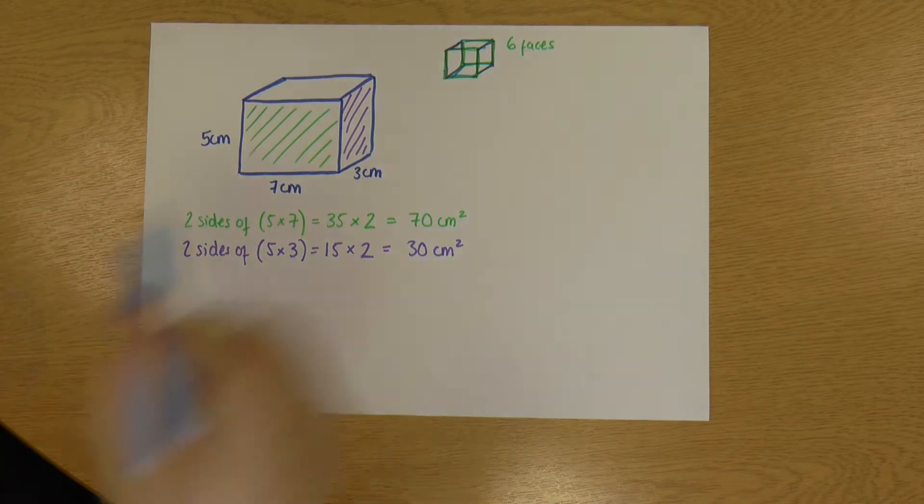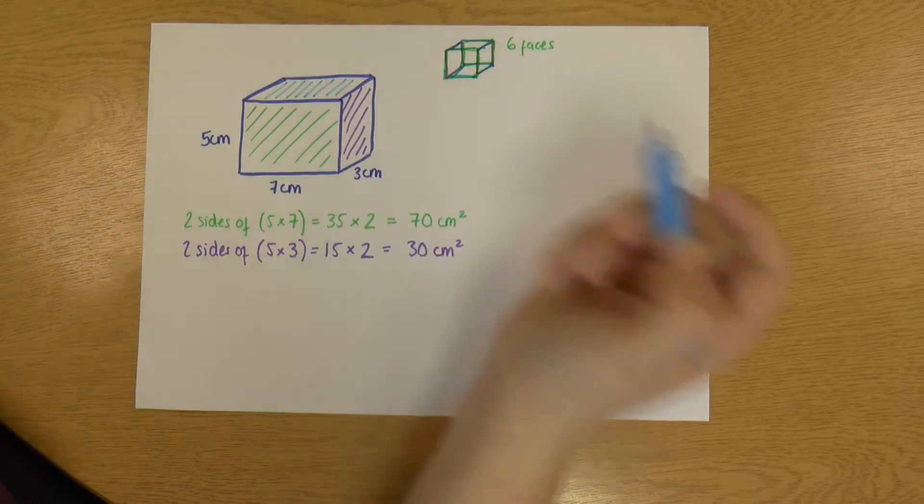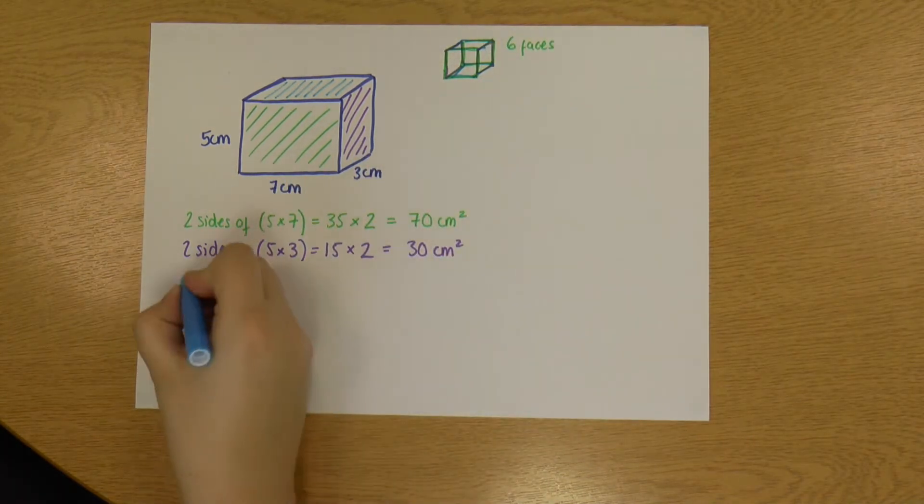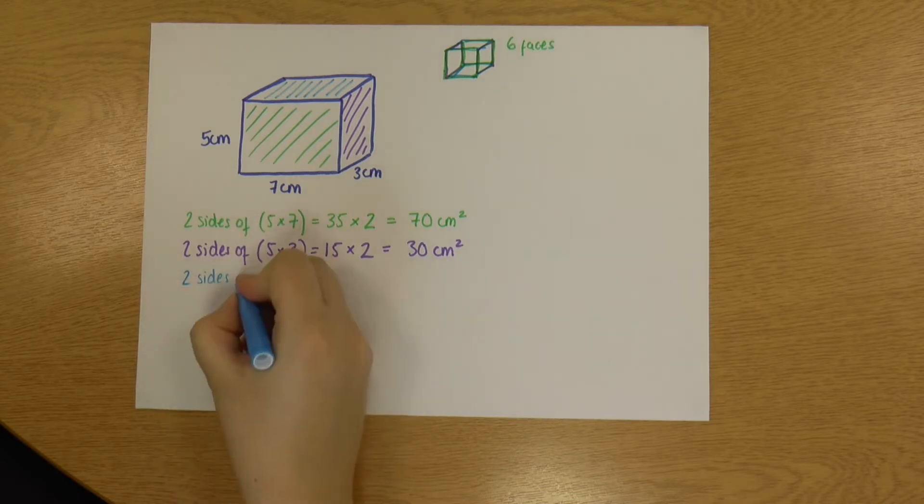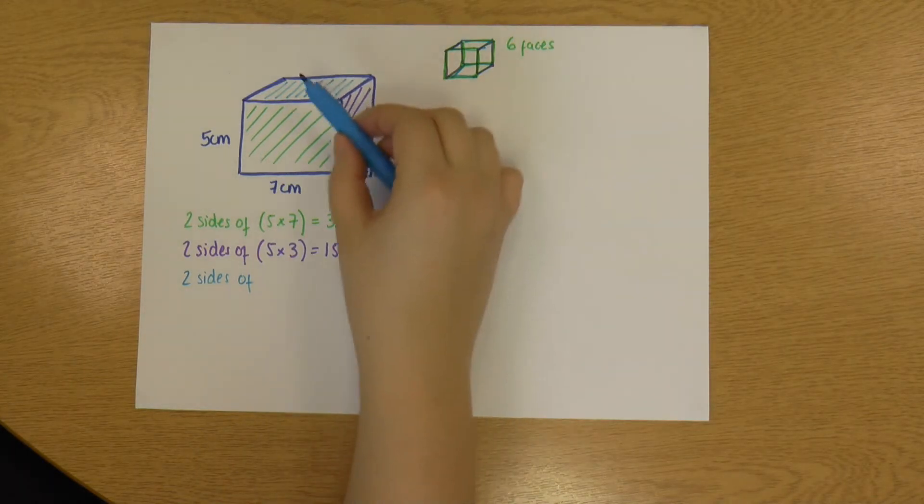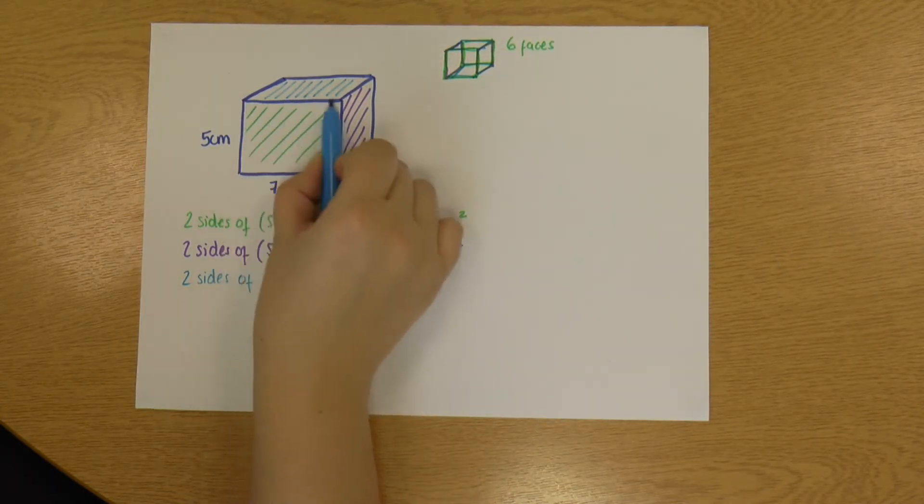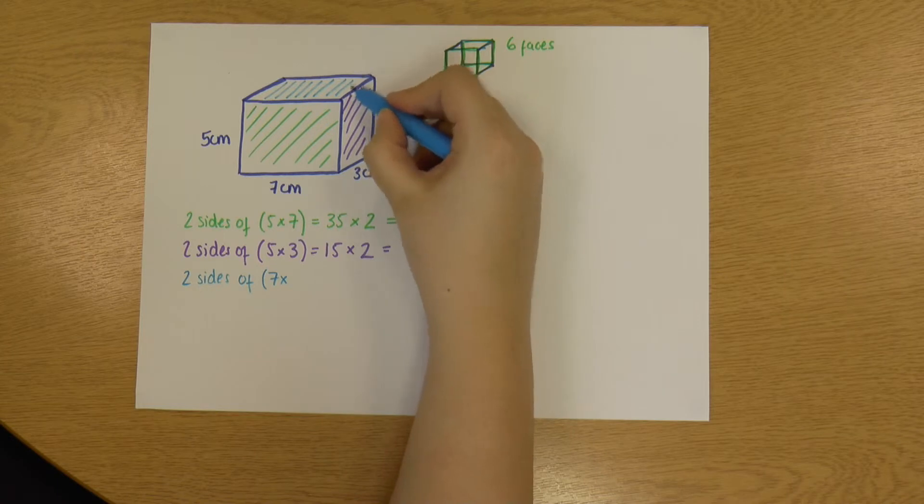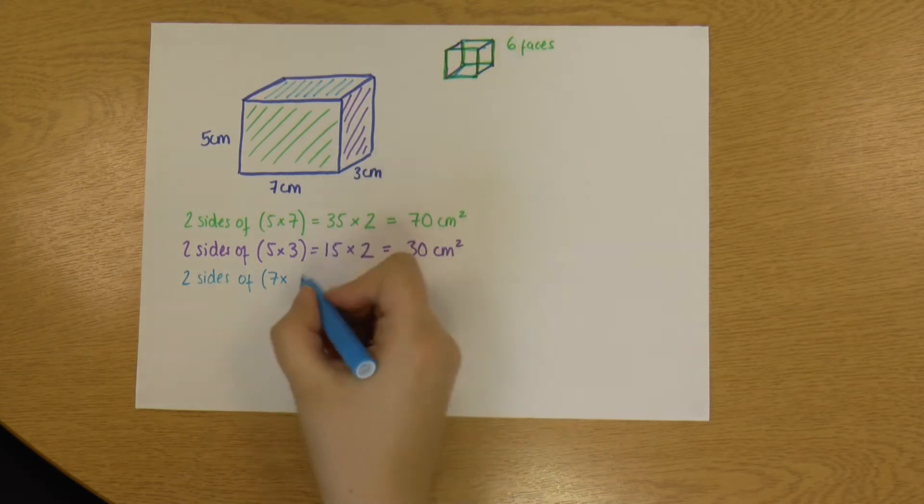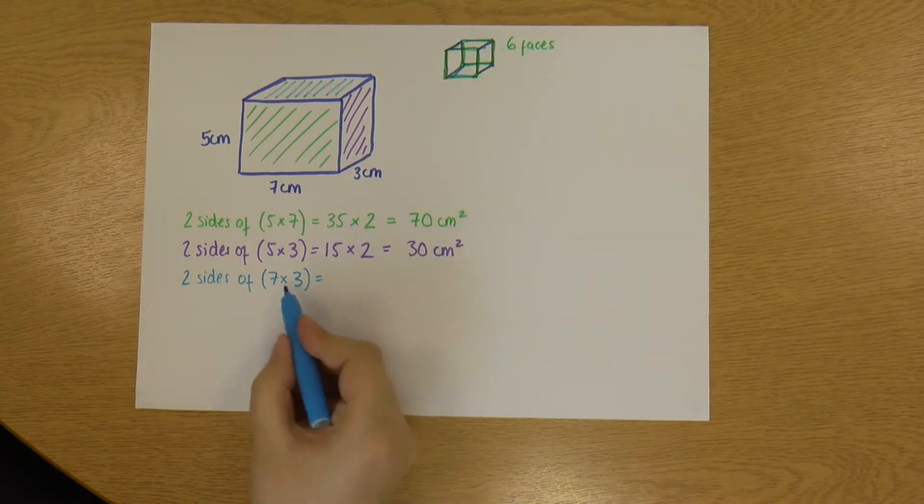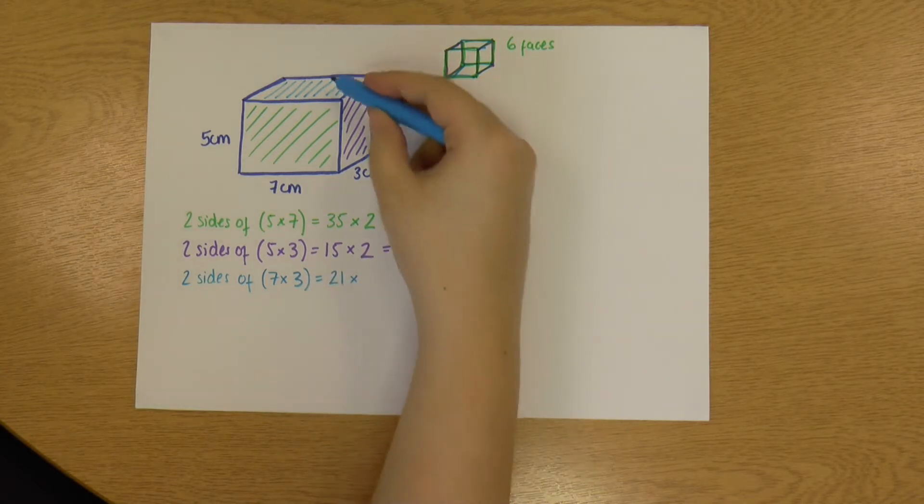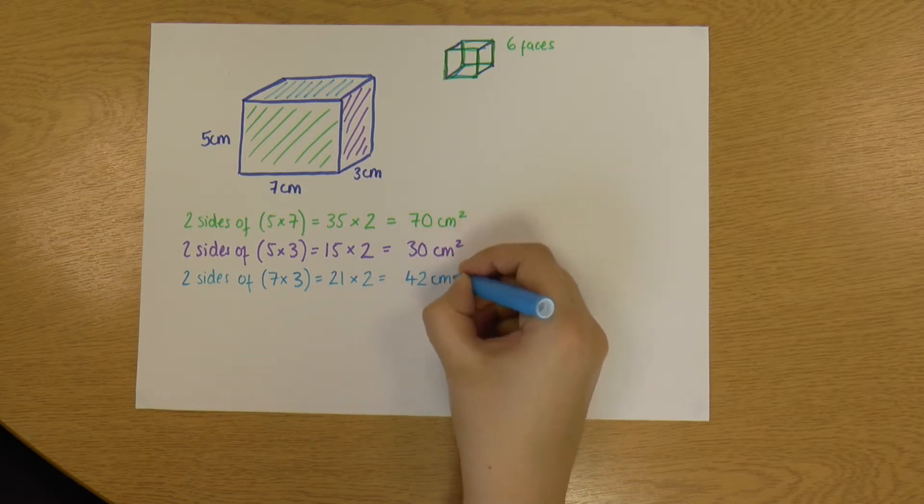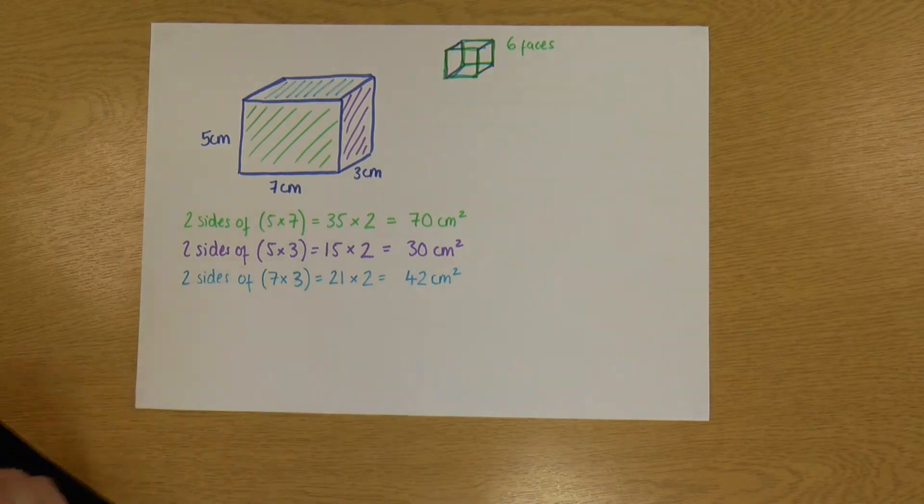And then our last two sides, this top one. Oh, that pen is a little bit dodgy, but we'll see. So it's this top side and the bottom as well that we can't see. So we've got two sides of... Now, again, we need to look at our shape. So this length is the same as this length, which is 7. And then this one is the same as this. So it's 3. So these are the same. 7 times 3. So 7 times 3 is 21. And we've got two of them, top and bottom. So it's times 2. So overall, both those sides make 42 cm².